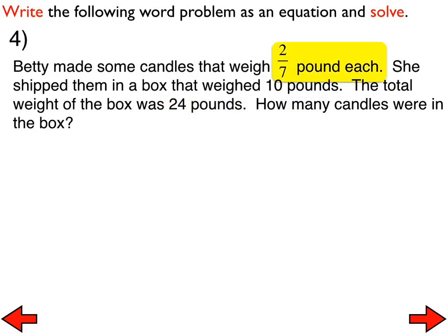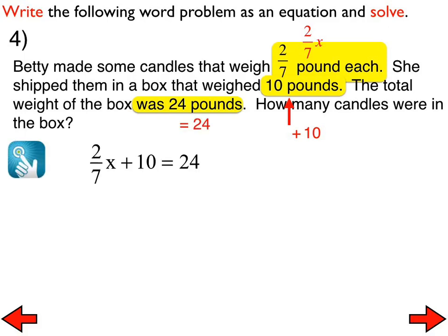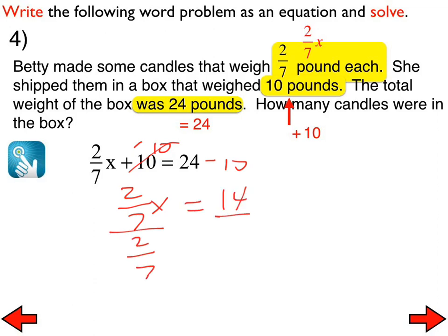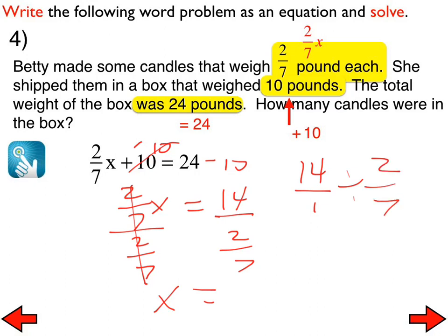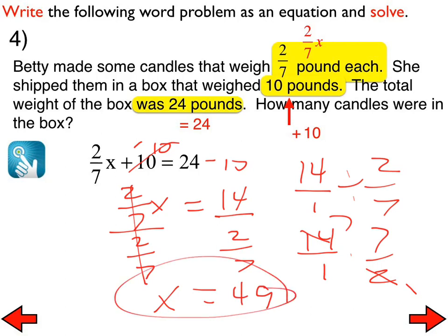Number 4: the equation we set up looks like 2 sevenths x plus 10 equals 24. We subtract 10 from both sides — that is the subtraction property of equality. We then divide both sides by 2 sevenths — that is the division property of equality. We need to figure out what 14 divided by 2 sevenths is. That turns into 14 over 1 times 7 over 2, and we can do a little cross-dividing, ending up with 49 candles in the box.